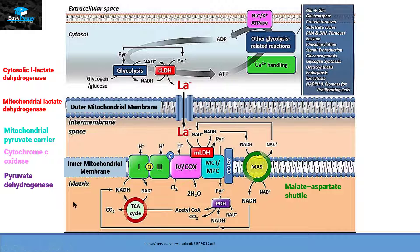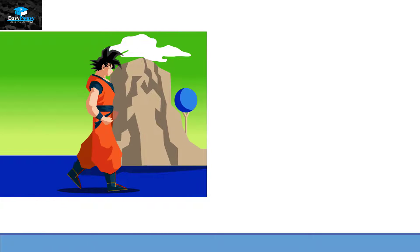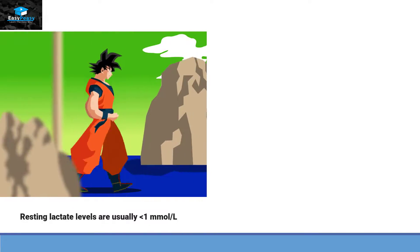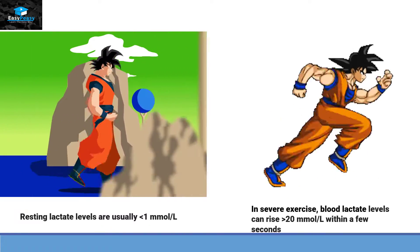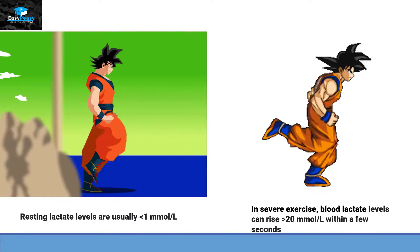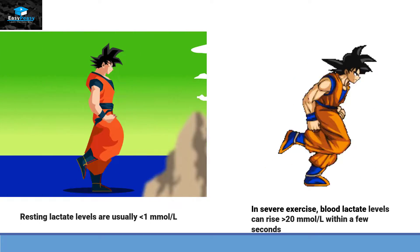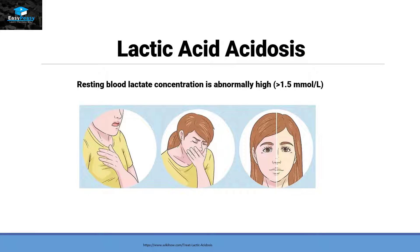So in the resting stage the level of lactate is less than 1 millimole per liter, but in severe exercise state the blood lactate level can rise up to 20 millimole per liter within a few seconds. But in the resting stage if the blood lactate concentration is above 1.5 millimole, then the person is suffering from lactic acidosis.